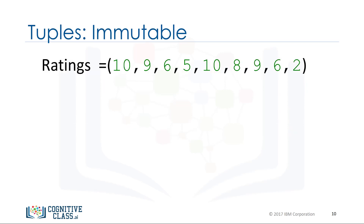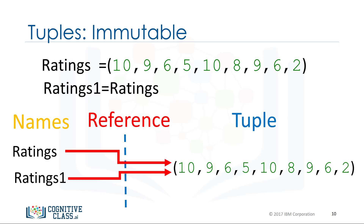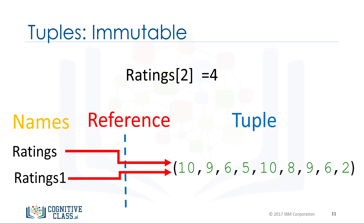Tuples are immutable, which means we can't change them. To see why this is important, let's see what happens when we set the variable 'ratings1' to 'ratings'. Each variable does not contain a tuple, but references the same immutable tuple object. See the objects and classes module for more about objects.